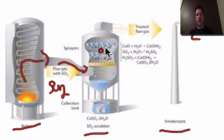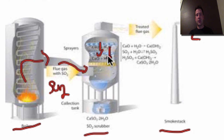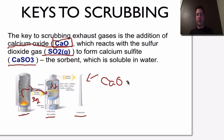Water and calcium oxide are added here. The calcium oxide is going to combine with H2O and react to produce calcium hydroxide.